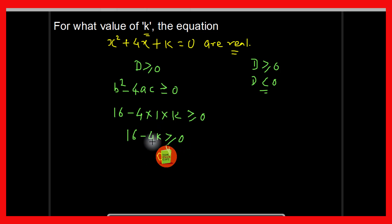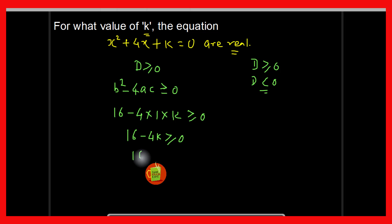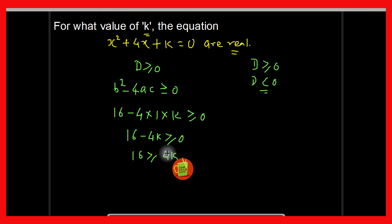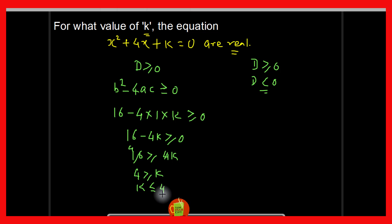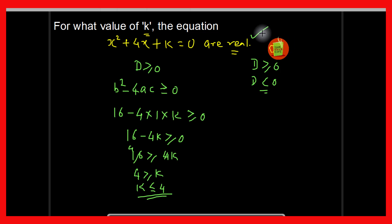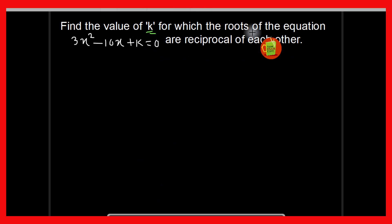When will this value be positive? Only if 16 is greater than or equal to 4k. Dividing both sides by 4 gives k less than or equal to 4. Therefore, for the given equation to have real roots, k should be less than or equal to 4.